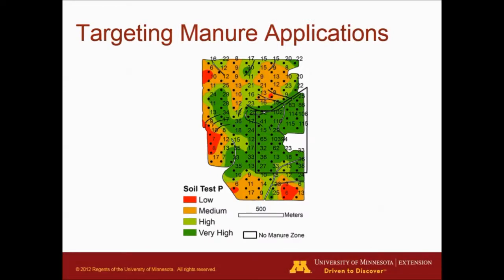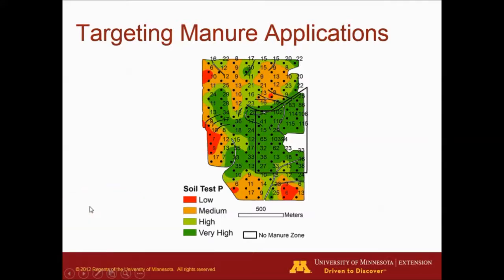Here's an example where you can actually target areas with low phosphorus soil test. This is a typical farm in Southeast Minnesota — you can probably imagine that the barn was around here. The green areas are areas with high soil phosphorus, and the orange and red areas are areas that have low soil phosphorus. If we divide this particular field, we can probably see a crop response to manure applied on the northern or western side of this field, but we'll probably not see any crop response — in particular to phosphorus — if we apply manure closer to the barn, since there is already plenty of phosphorus in that specific soil.